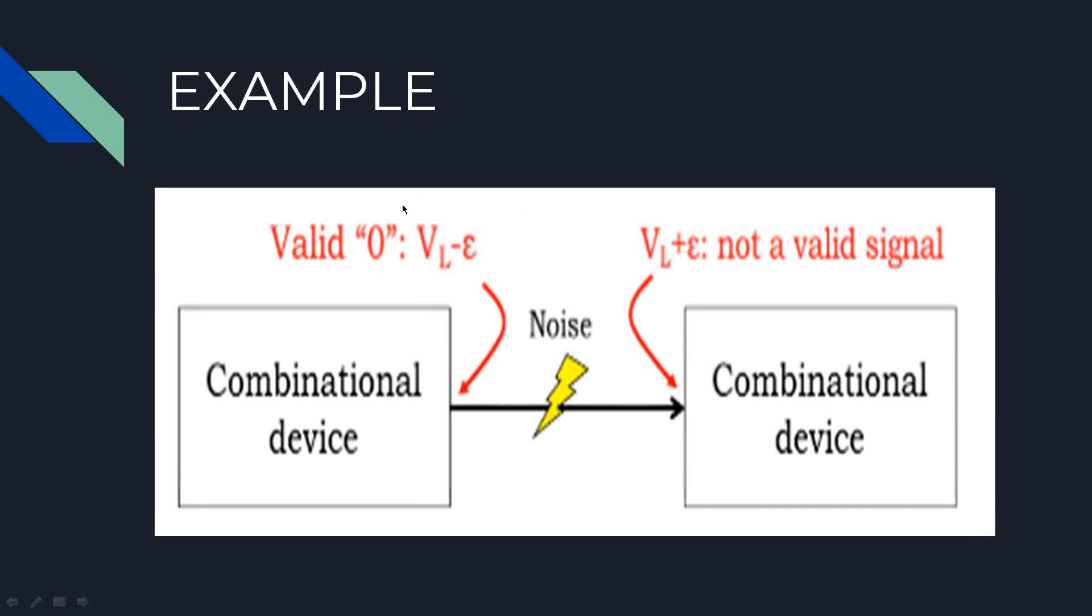You can see that this is a proper logic zero but it's not a valid signal when it comes to the input of circuit 2. The received signal is no longer a valid digital input. The output now is no longer guaranteed. So due to some electrical noise our system is behaving incorrectly. Looks like the output voltage needs to be adjusted so that a signal will still be valid when it reaches an input even if there is noise.